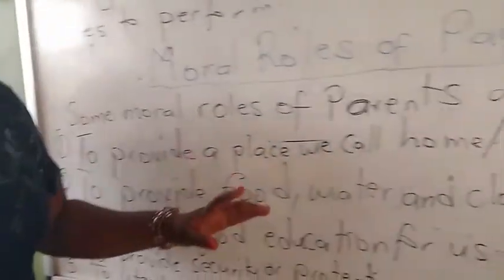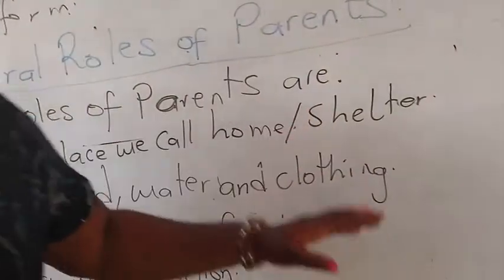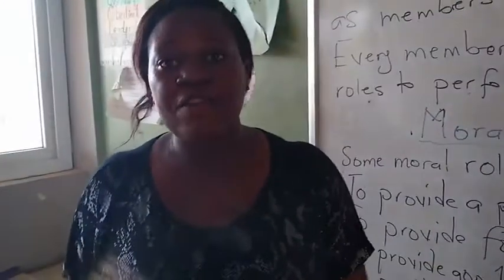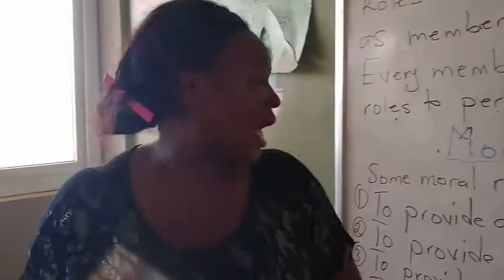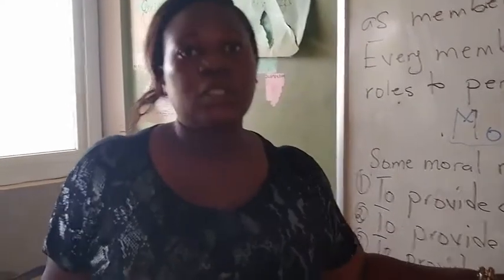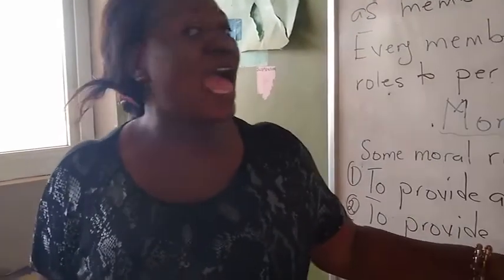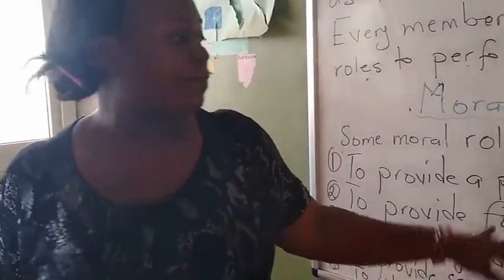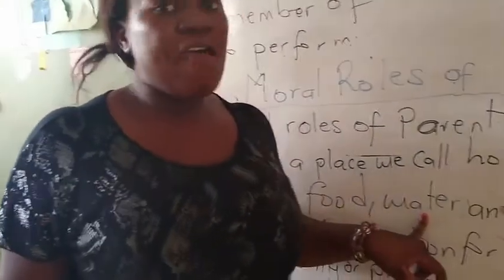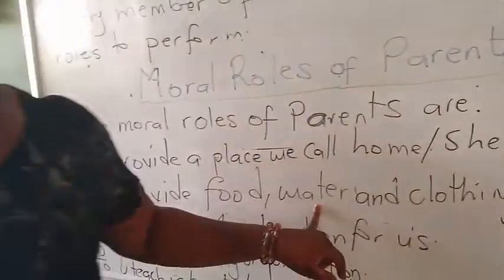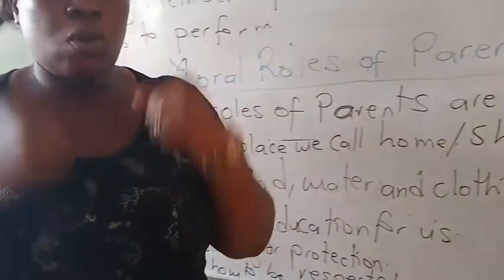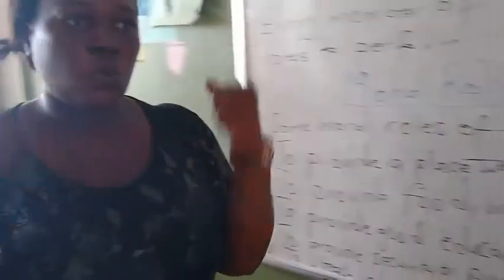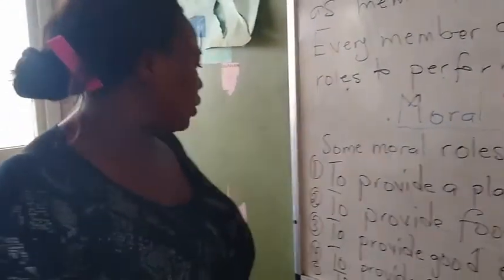Number 2, to provide food, water, and clothing. It is the responsibility of every parent — that is the mother and the father — to provide food for every member of the family, water for every member of the family, and clothing — what we are supposed to wear to cover our bodies.